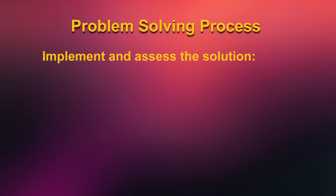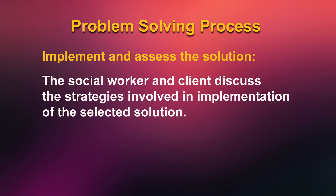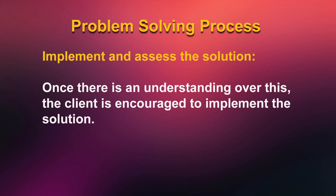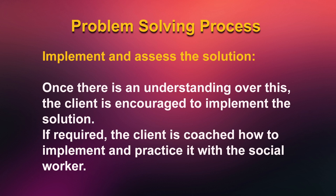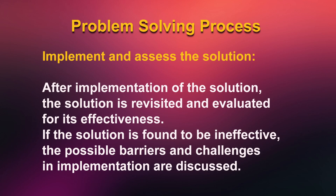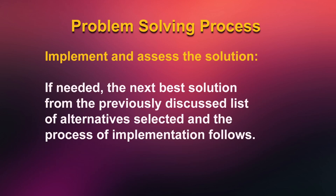Out of the listed alternatives, the client selects the possible solution with the help of the social worker. The fifth step is to implement and assess the solution. The social worker and client discuss strategies for implementing the selected solution and methods to weigh its effectiveness. The client is then encouraged to implement the solution; if required, the client is coached on how to implement and practice it with the social worker. After implementation, the solution is revisited and evaluated for effectiveness. If found ineffective, barriers and challenges are discussed and the next best alternative is selected and implemented.